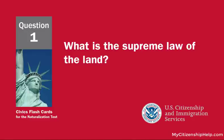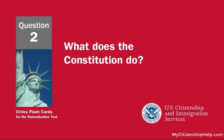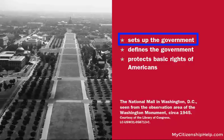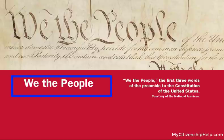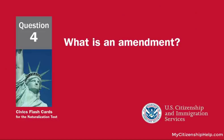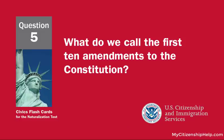What is the supreme law of the land? The Constitution. What does the Constitution do? It sets up the government. The idea of self-government is in the first three words of the Constitution. What are these words? We the people. What is an amendment? A change to the Constitution.